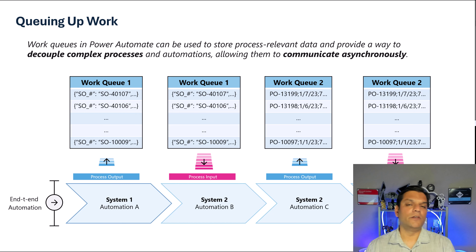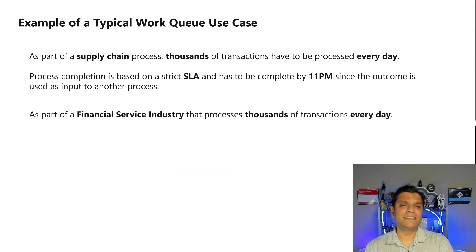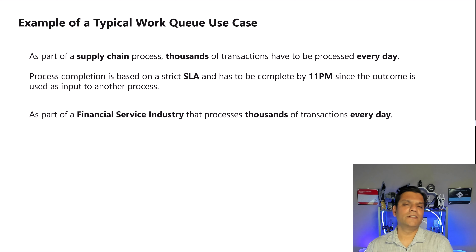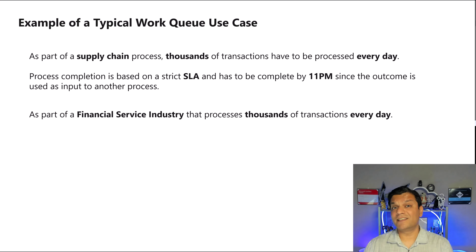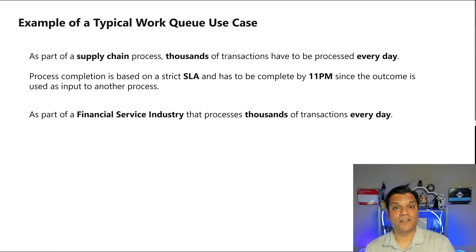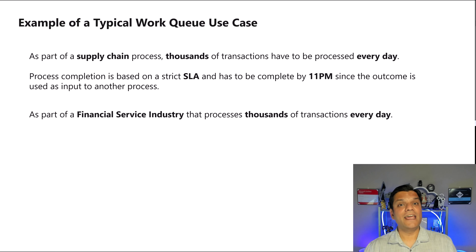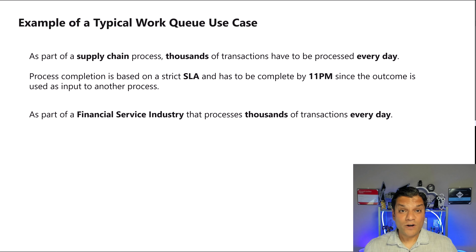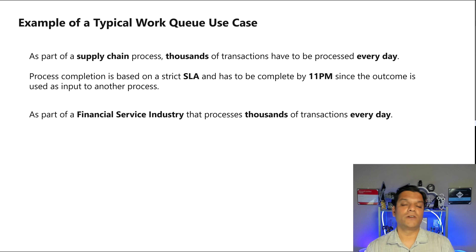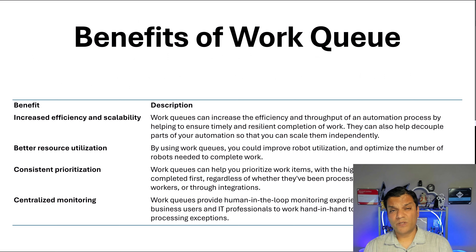So stick with this, it's very important. Here's an overview of what queuing up work looks like. I've got four different types of work queues, and it's important to note that some of them process an output versus an input, and for each of them there is some kind of automation task involved. So it's for these complex processes which require automation but run completely asynchronously.